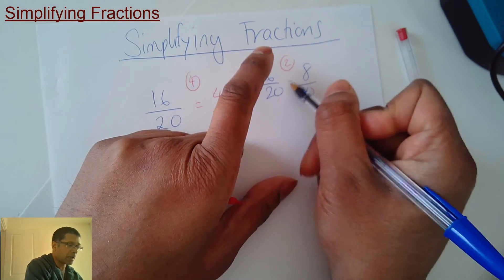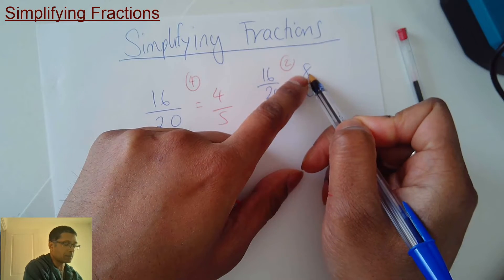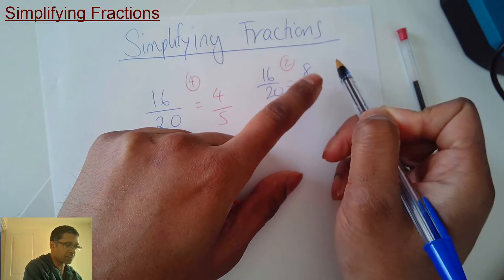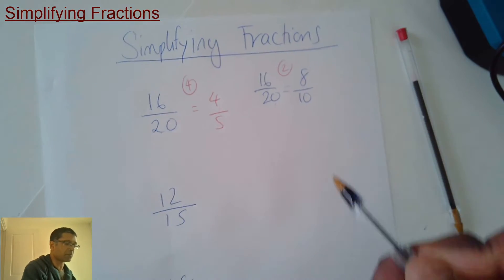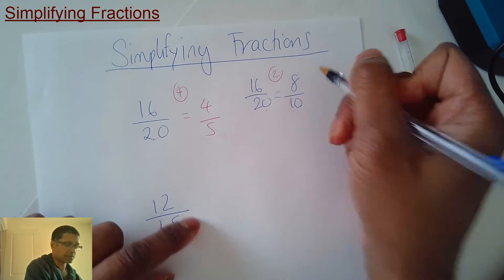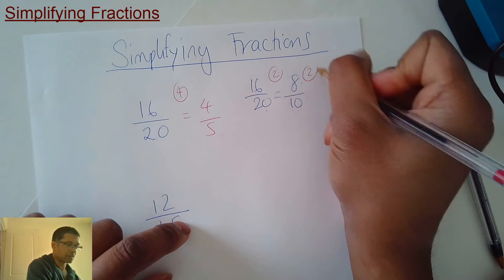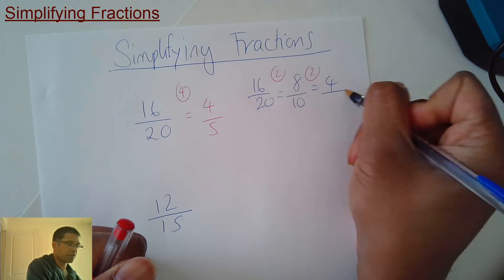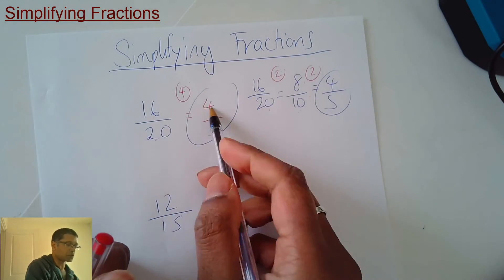So can you think of a number that goes into 8 and 10? Which times table has got the 8 and 10 in it? It's the 2 times table. 8 divided by 2 is 4. 10 divided by 2 is 5. Look, same answer. But this was much quicker.